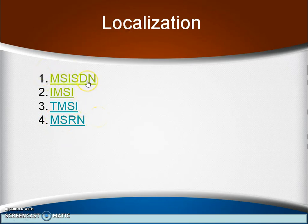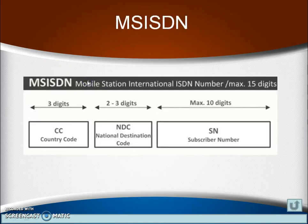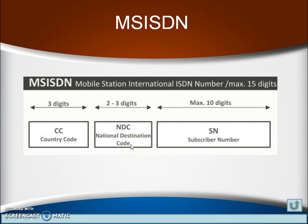The MSISDN number is nothing but your GSM mobile number — this number is associated with the SIM card. It can have 3 digits of country code, 2 to 3 digits of national destination code, and the remaining digits are used for the subscriber number. The country code is unique for each and every country, and the national destination code is the network provider's address, also assigned uniquely throughout the world in the GSM network.